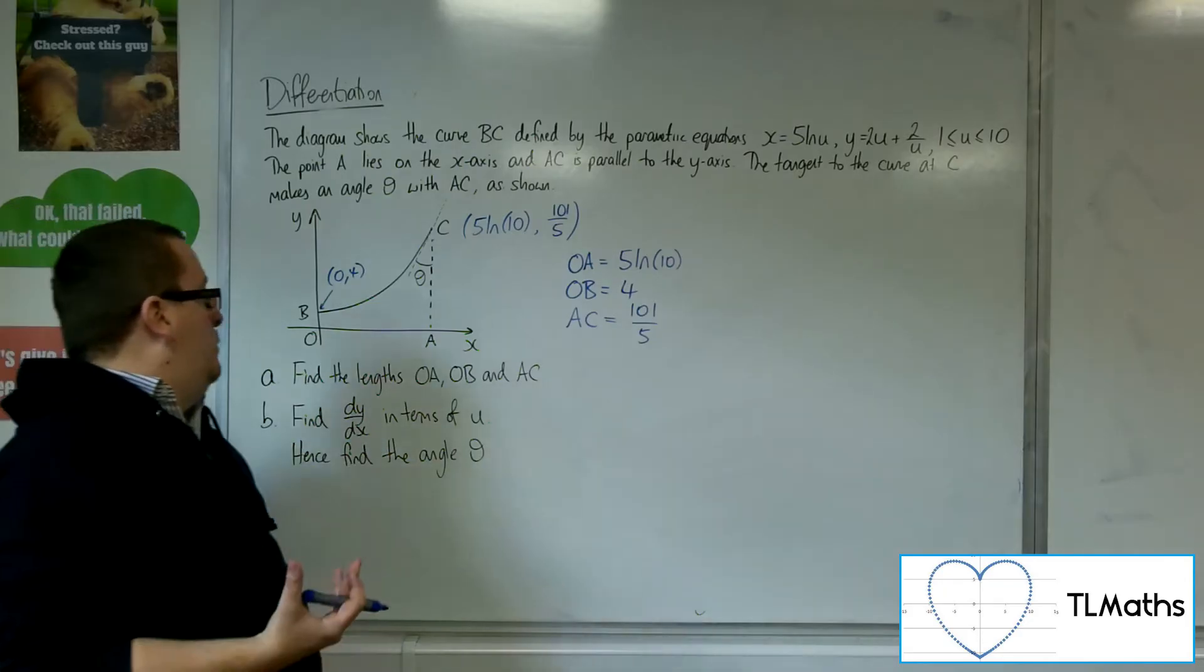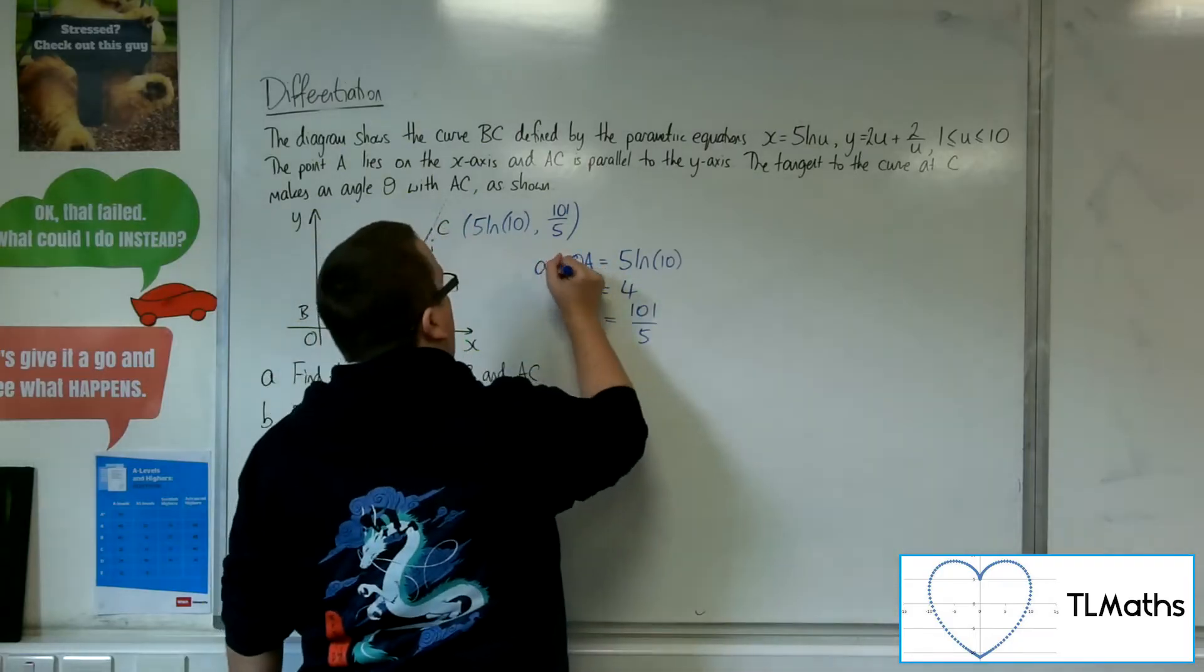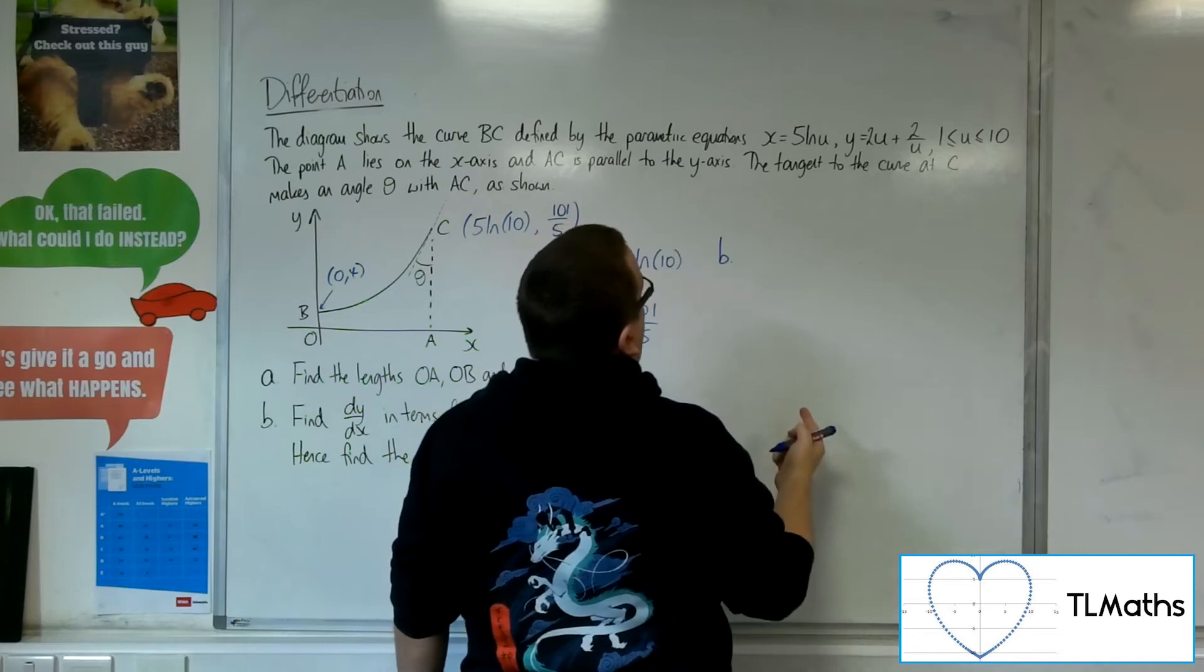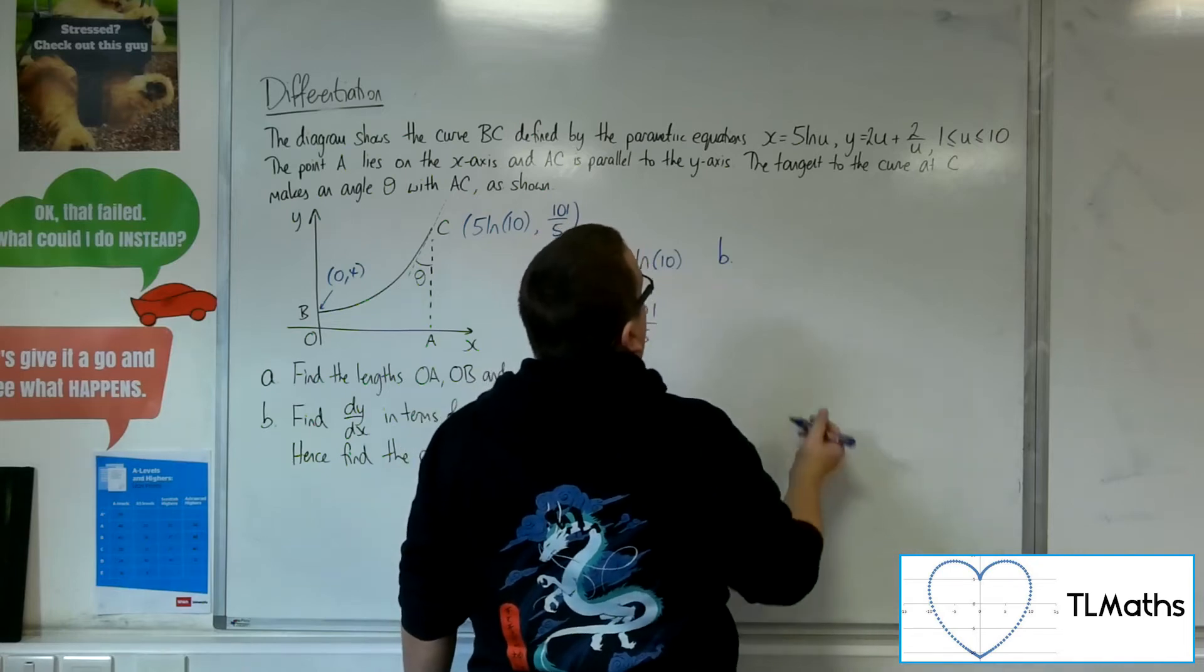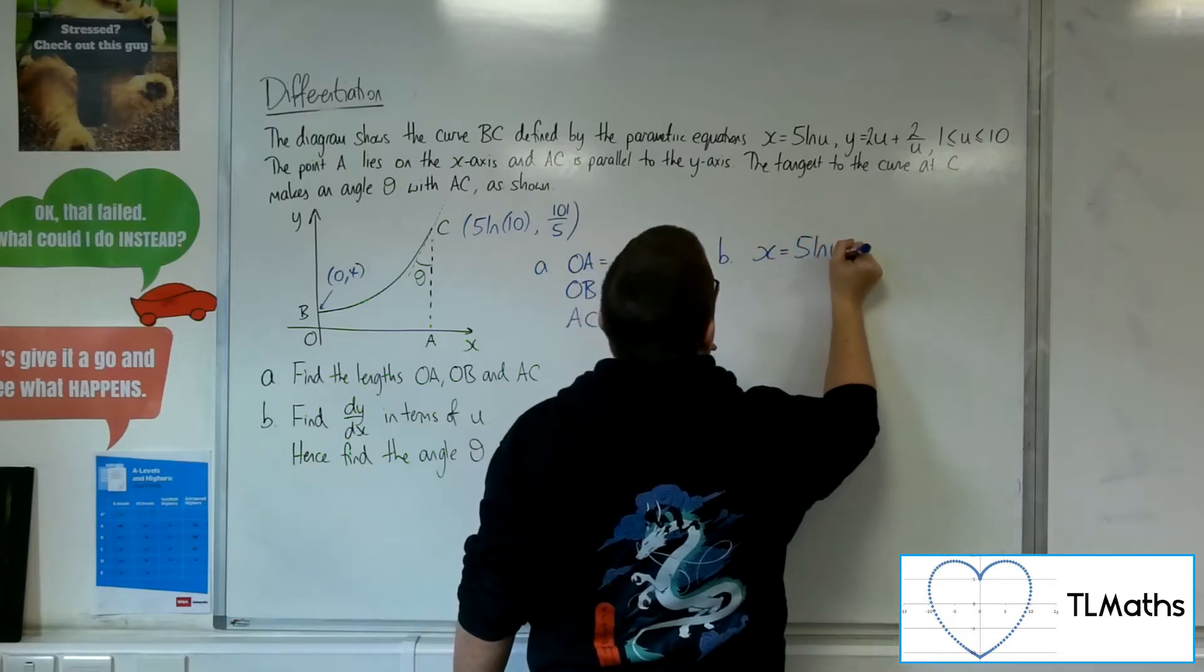So next, find dy by dx in terms of u. So that was A. Now for B, I'm going to need to find dx by du and dy by du. So, first of all, let me just rewrite x and y.